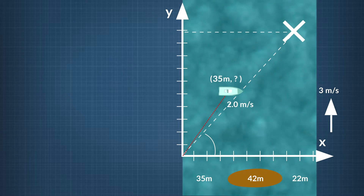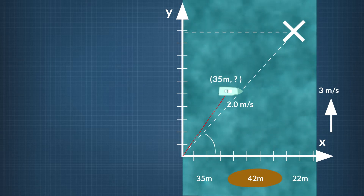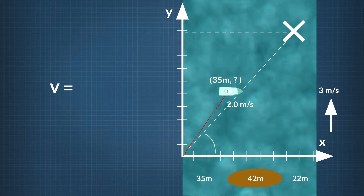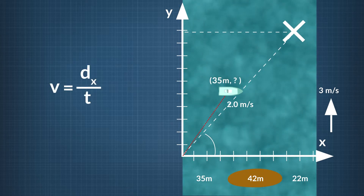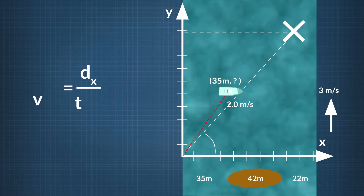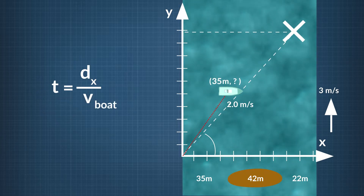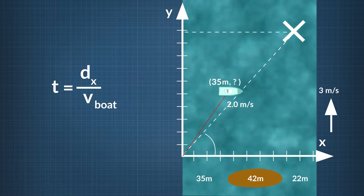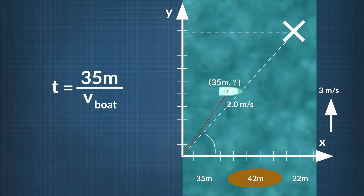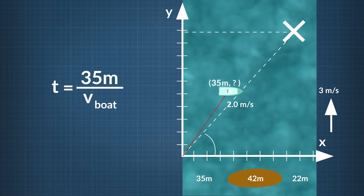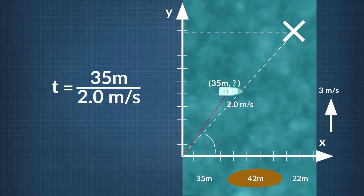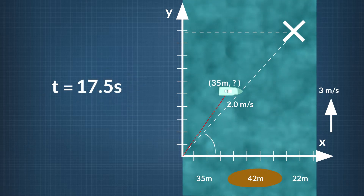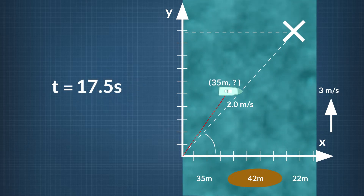To figure out how far downstream the river takes it in that time, we can use our constant velocity equation, v equals d sub x divided by t. We solve for the time by rearranging our equation to see that time is equal to distance divided by velocity. The boat's horizontal distance traveled is 35 meters, and its horizontal velocity is 2.0 meters per second. So the time the first leg of the river crossing takes is 17.5 seconds, or, using significant figures, 18 seconds.